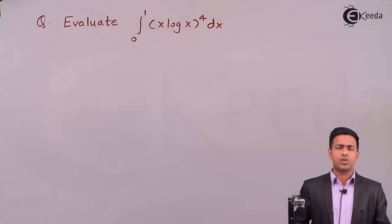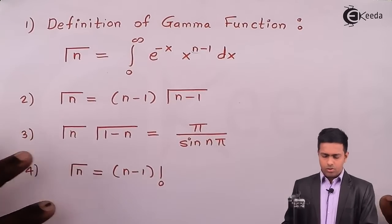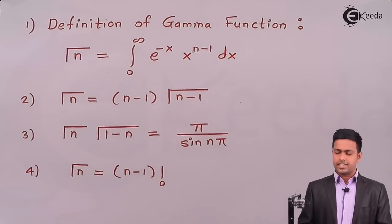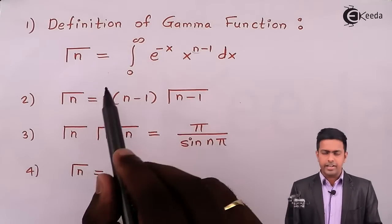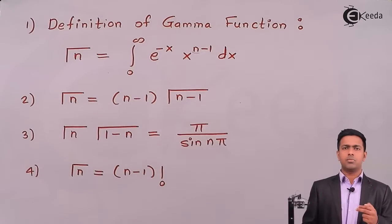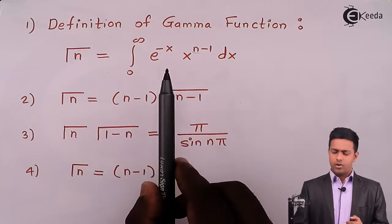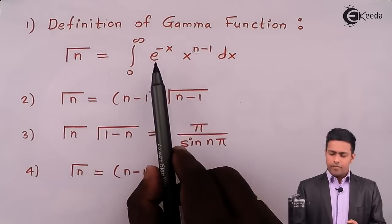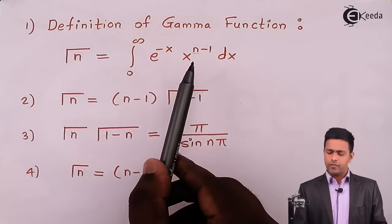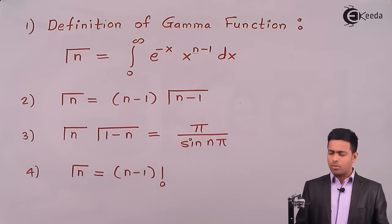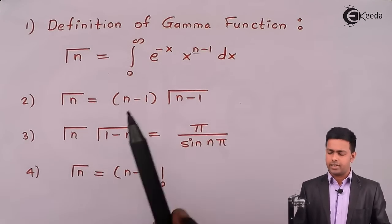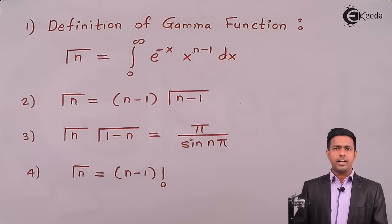To solve it by gamma function, let us understand the definition. As per the definition of gamma function, gamma(n) is the integration from 0 to infinity of e raised to minus x, times x raised to n minus 1, dx. This means the integration must have two functions — one exponential and one algebraic — where the power of the exponential must be minus x. Note that the value inside gamma is always 1 greater than the power of x.